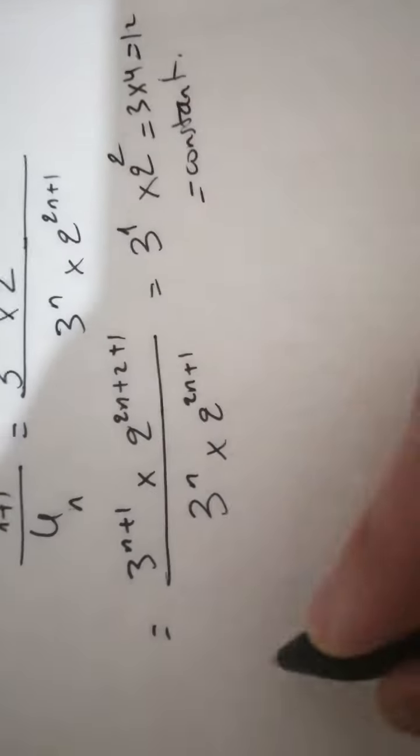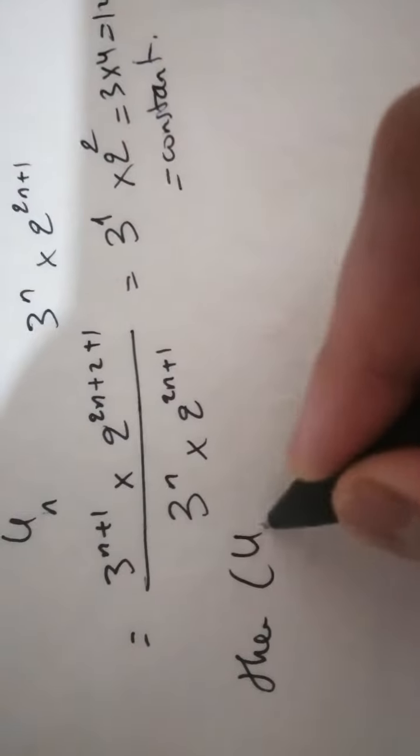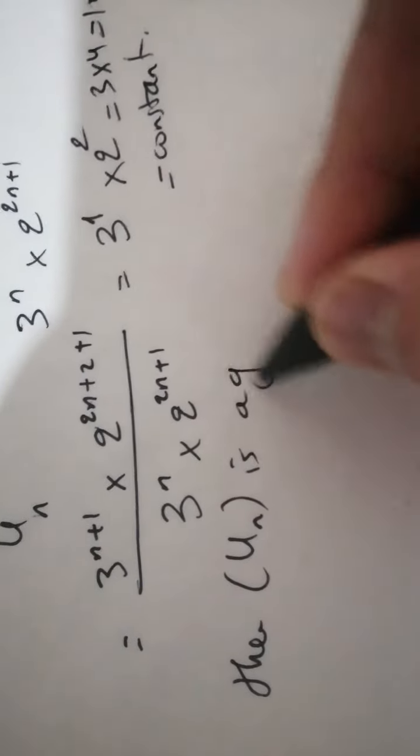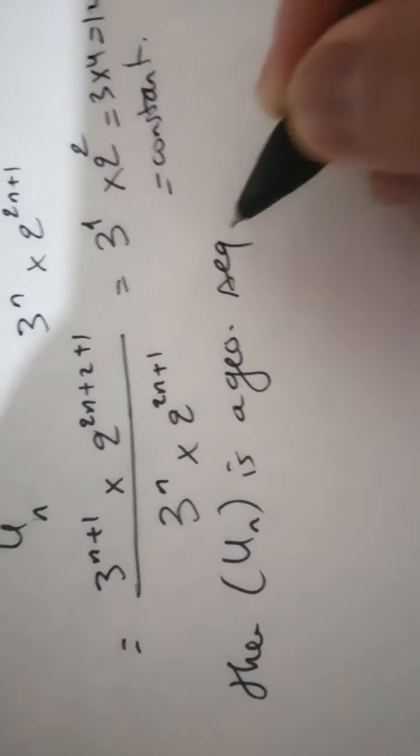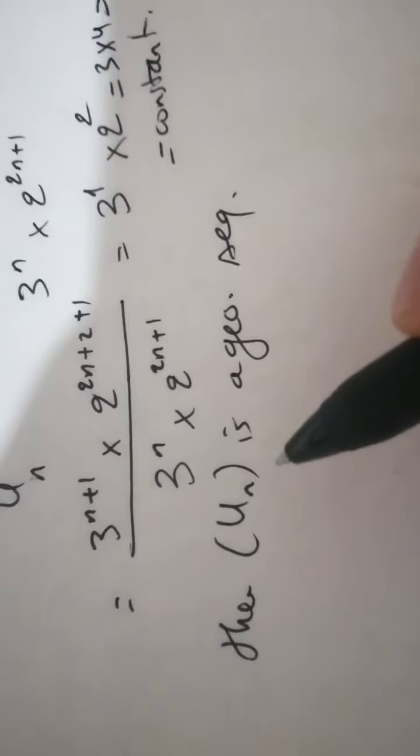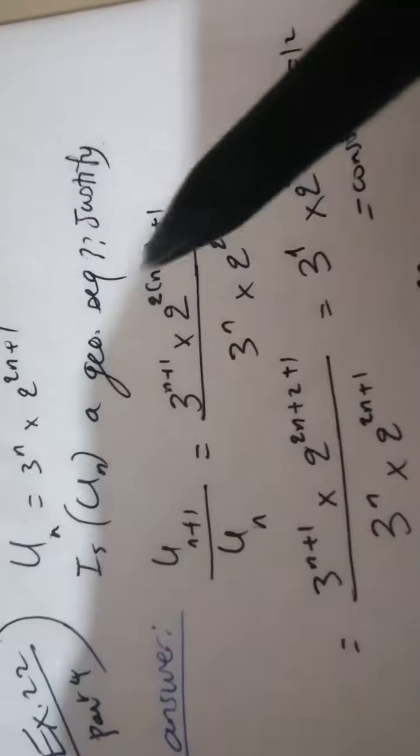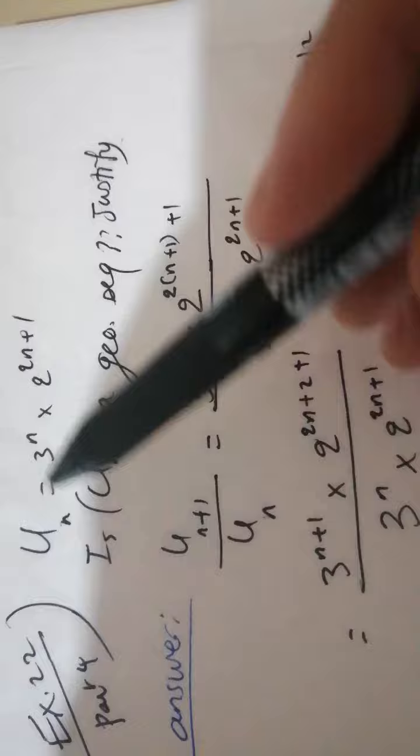Then we say that UN is a geometric sequence. When we talk about the sequence, I'll put the UN in bracket, but when we talk about the general term, I'll put the UN in bracket as well.